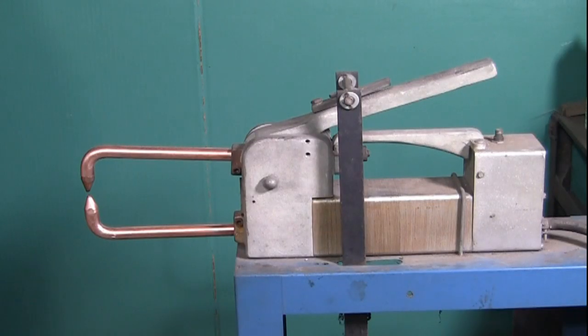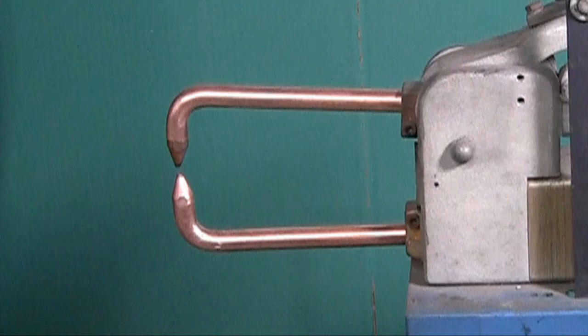Spot welding is a very simple way of joining steel or stainless steel. Now it won't work on copper, brass, or aluminum. Only steel or stainless steel.